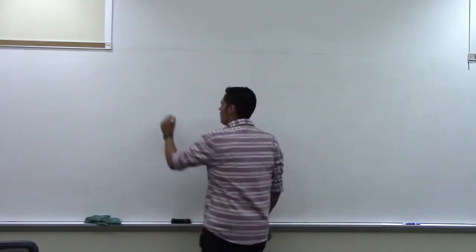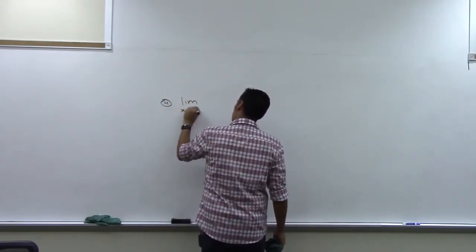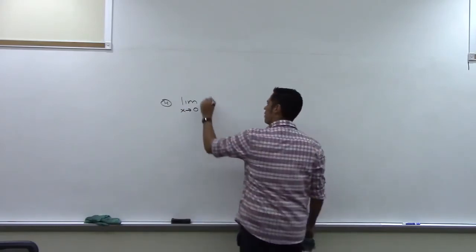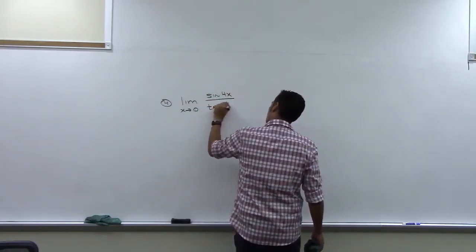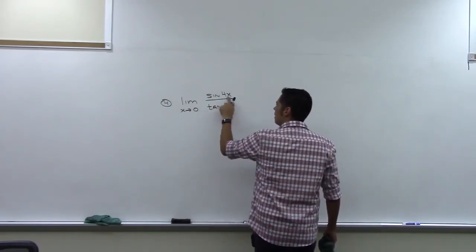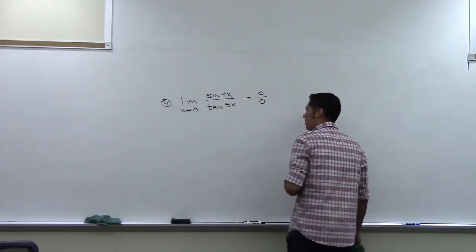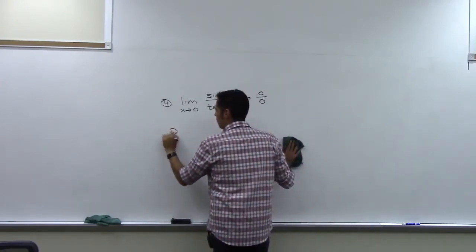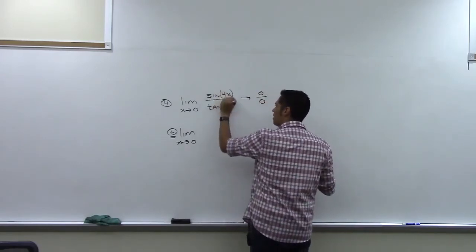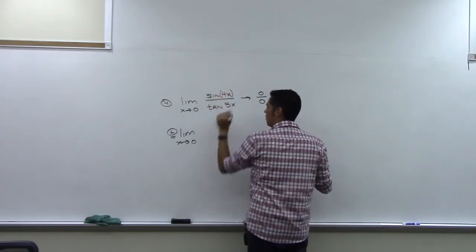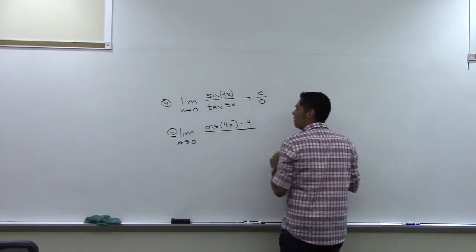Number four: the limit as x approaches zero of sine(4x) over tangent(5x). As x goes to zero, four times zero is zero and sine of zero is zero, so we get zero on top. Five times zero is zero and tangent of zero is also zero, so we have the zero over zero form needed for L'Hôpital's rule. The derivative of the top requires the chain rule: derivative of sine(4x) is cosine(4x) times four.